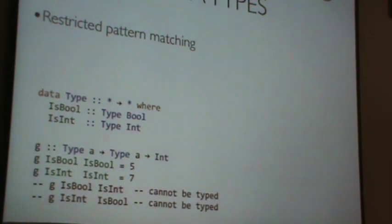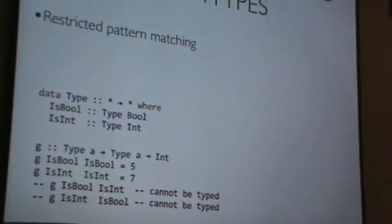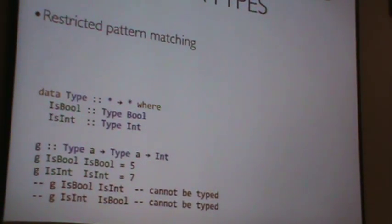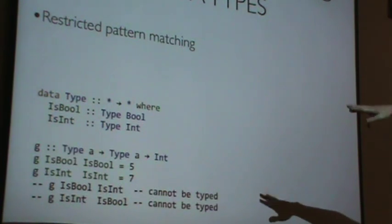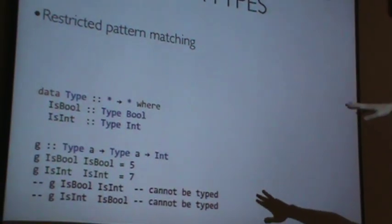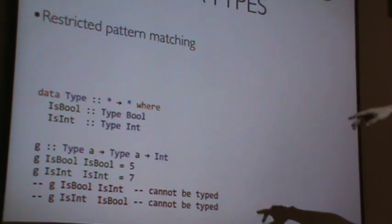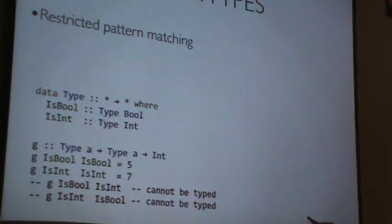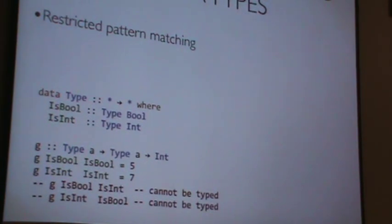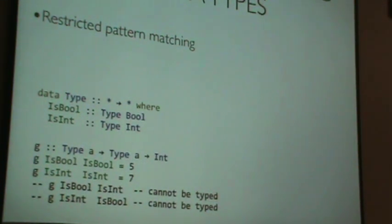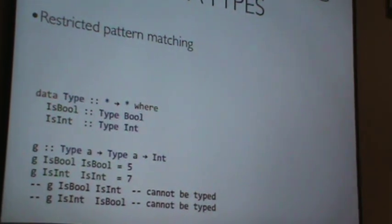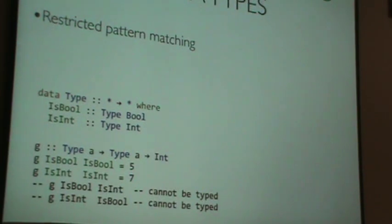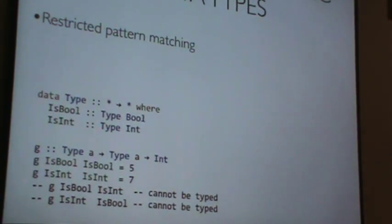And so, we can, another thing is that it restricts pattern matching. The knowledge that's acquired by pattern matching on one constructor can flow to another constructor. And so, here, say we took two of these type arguments, the only valid patterns for this function are is bool is bool, and is int is int. The other two combinations, which you might think of writing, are not well typed. And so, you simply cannot write them. GHC, up until very recently, would let you write them and give you a warning that it was, it made no sense, but now it actually gives you an error.